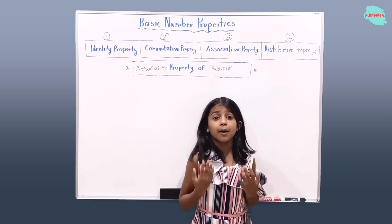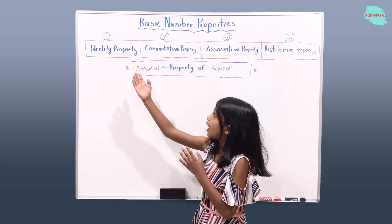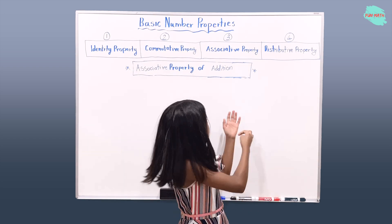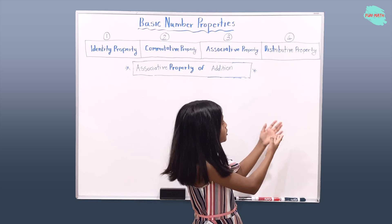Here we have four different types of properties which are called identity property, commutative property, associative property, and distributive property.